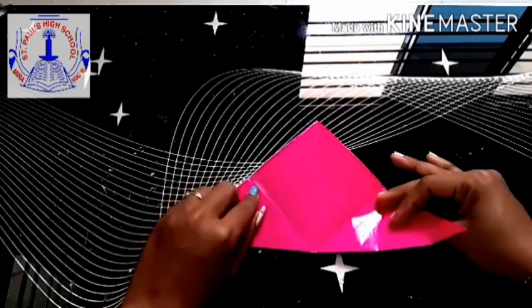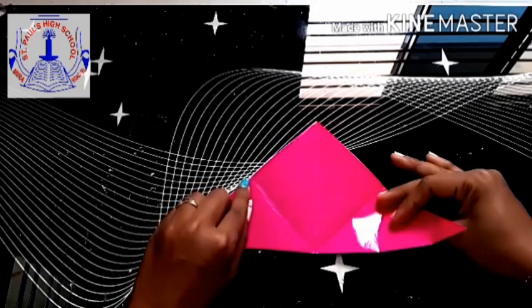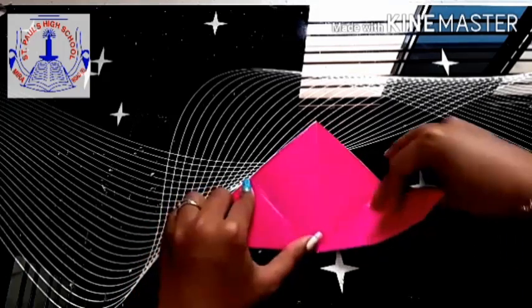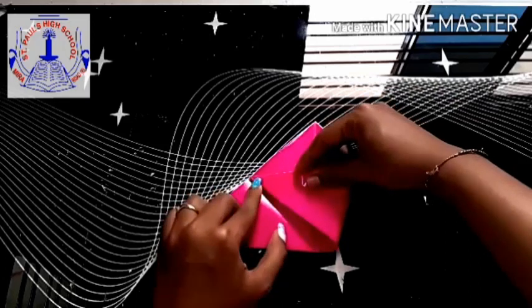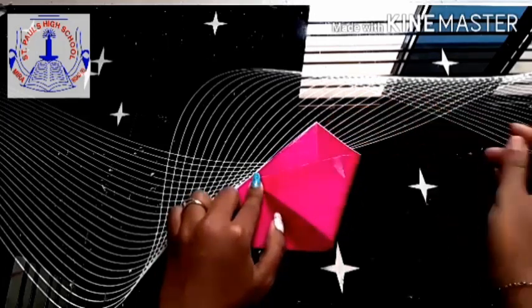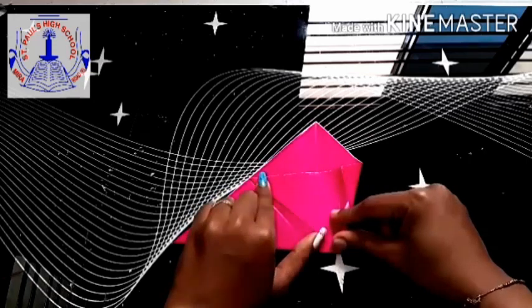See this C. Right hand side flap. Fold it. You are going to fold it towards the left. Crease it well.